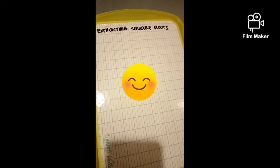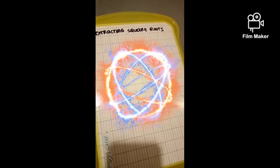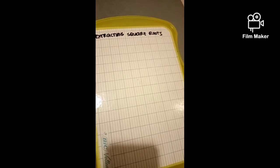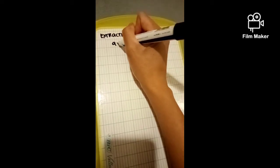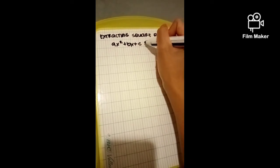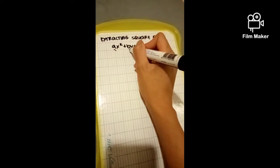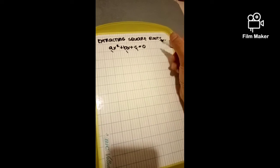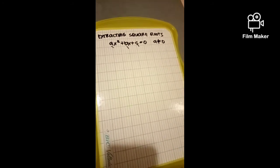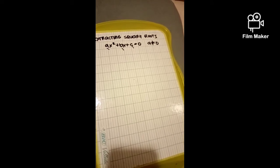Hello, I'm back, and our topic for today is about extracting square roots. A quadratic equation is in standard form if it is equal to 0: ax squared plus bx plus c equal 0, where a, b, and c are real numbers and a is not equal to 0. A solution to such an equation is a root of the quadratic function.